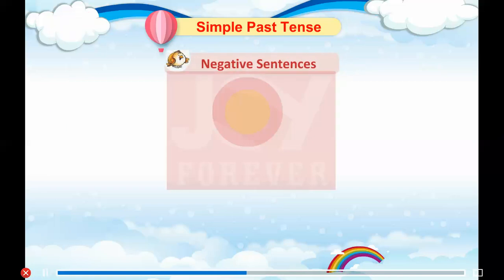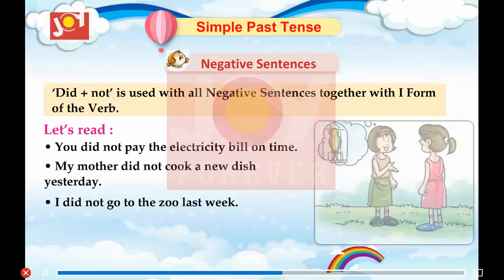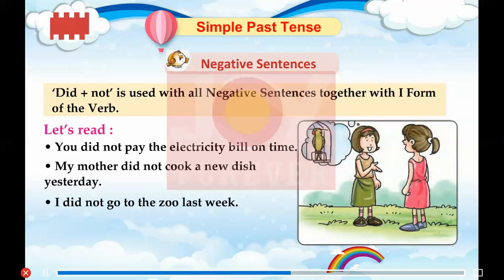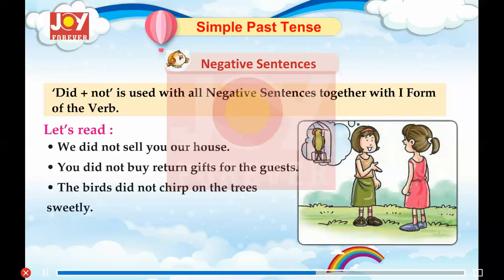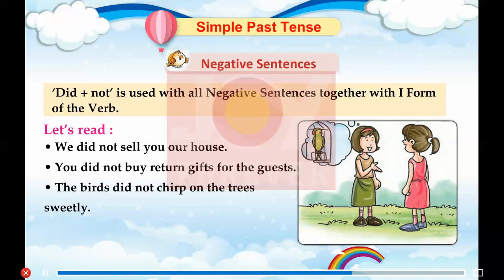Negative Sentences. 'Did not' is used with all negative sentences, together with the first form of the verb. Let's read. You did not pay the electricity bill on time. My mother did not cook a new dish yesterday. I did not go to the zoo last week. We did not sell you our house. You did not buy return gifts for the guests. The birds did not chirp on the trees sweetly.